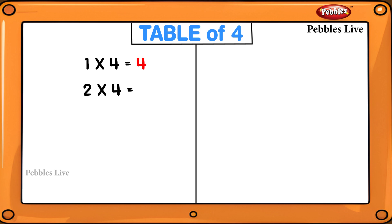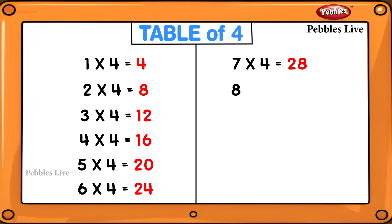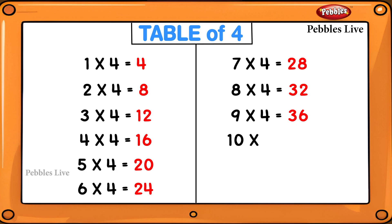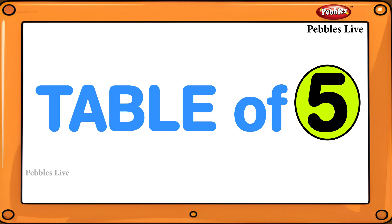2 fours are 8, 3 fours are 12, 4 fours are 16, 5 fours are 20, 6 fours are 24, 7 fours are 28, 8 fours are 32, 9 fours are 36, 10 fours are 40, 11 fours are 44, 12 fours are 48. Table of 5.